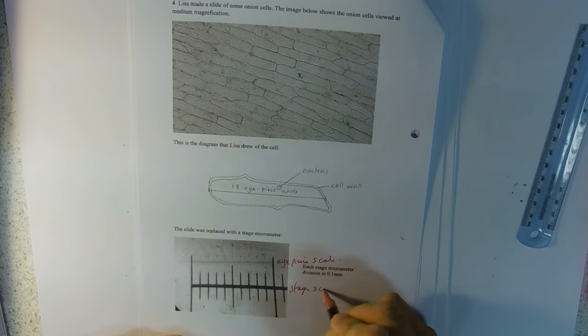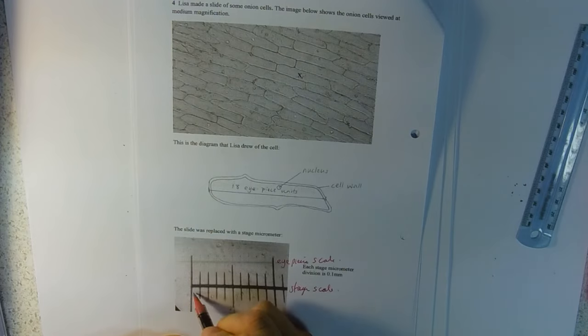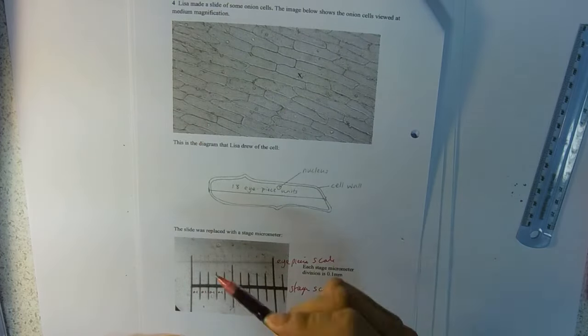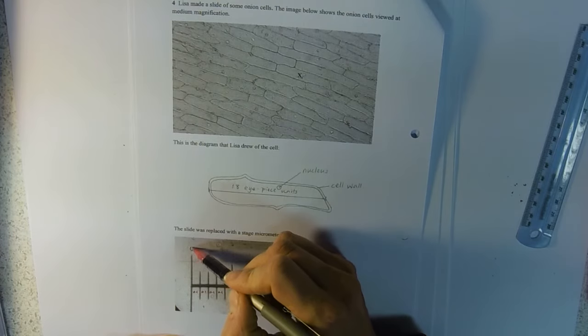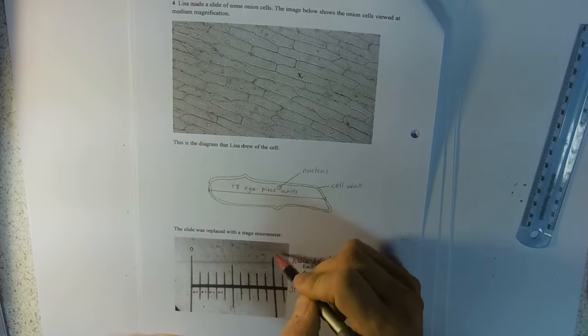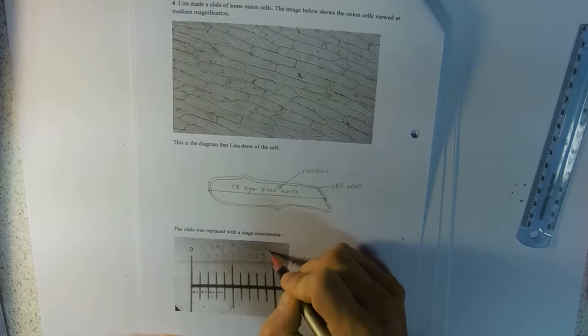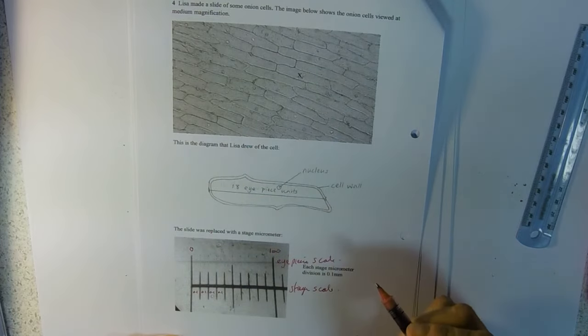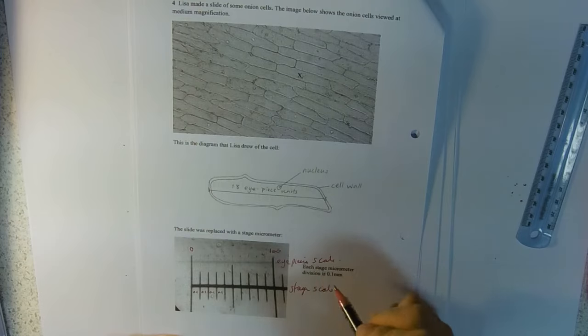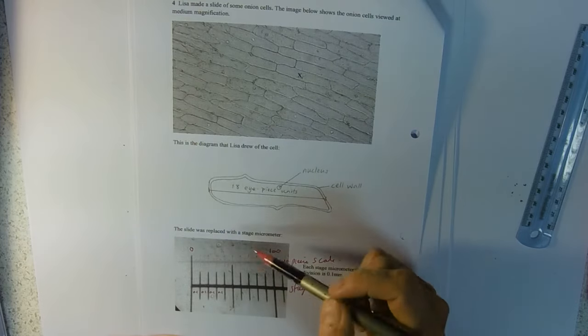And this is the stage micrometer scale. 0.1 millimeters here, so 0.1, 0.1, 0.1 and so on. So those are each 0.1. The scale that we're using, so we use the tiny little units, so that will be 0 to 100 there on the eyepiece scale.